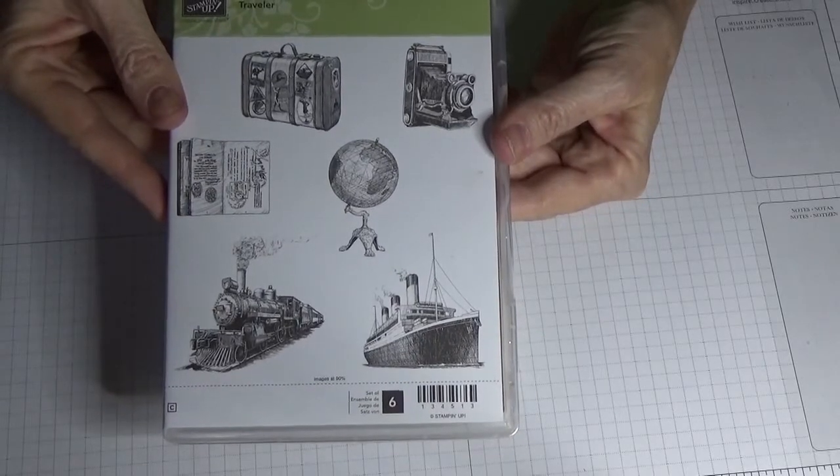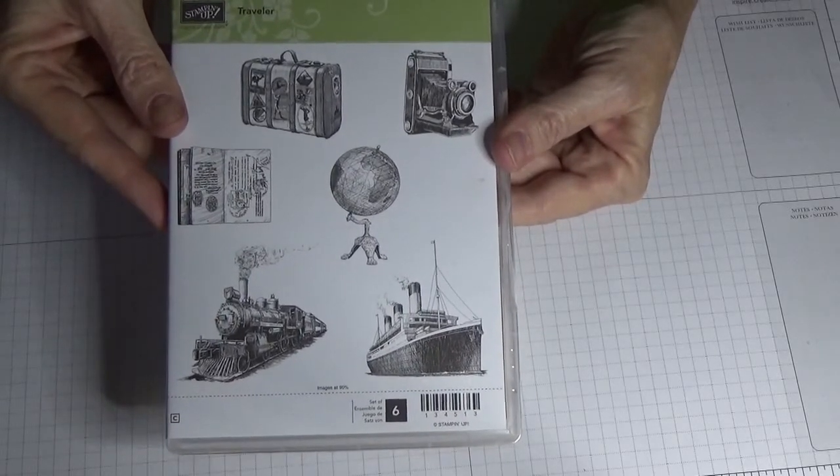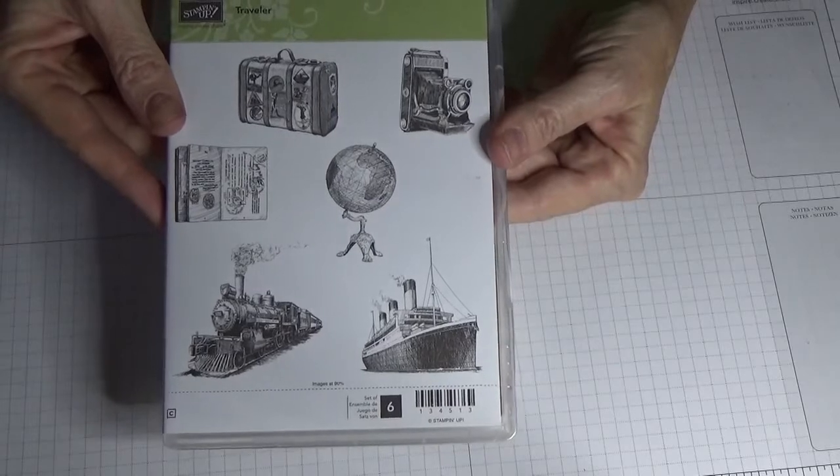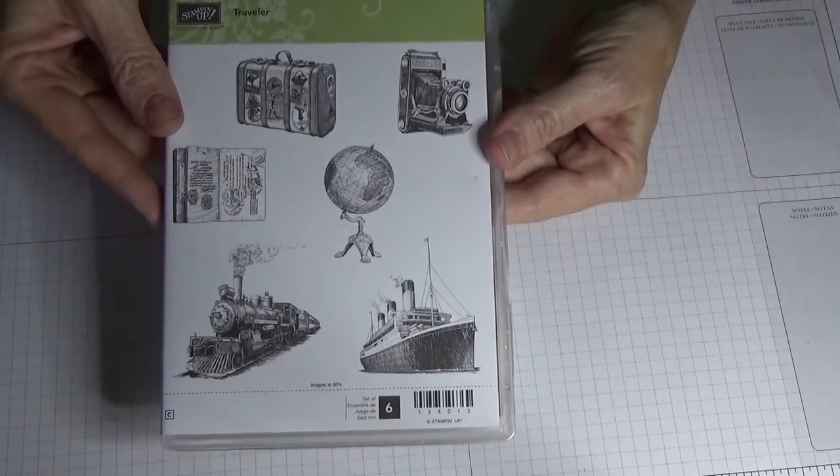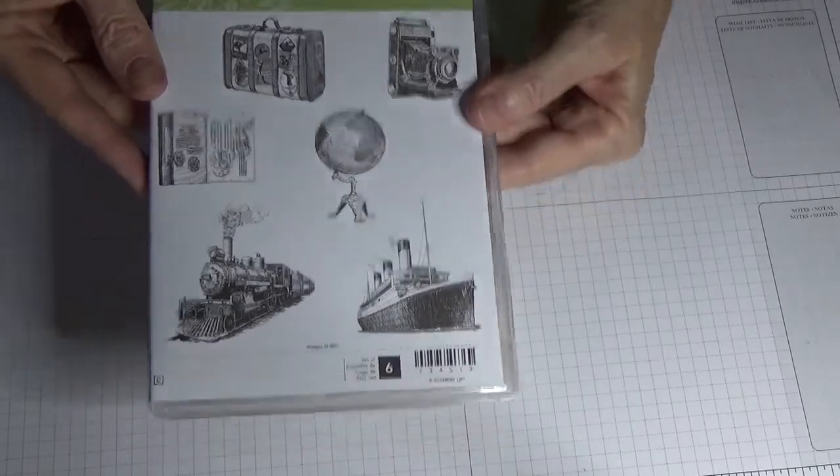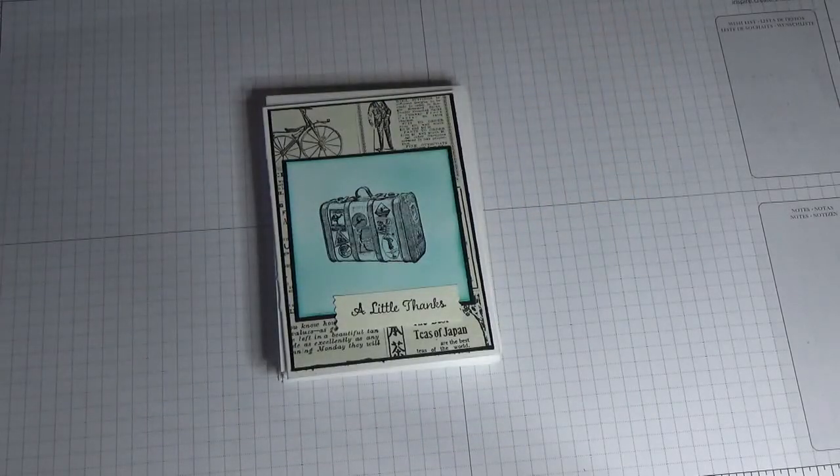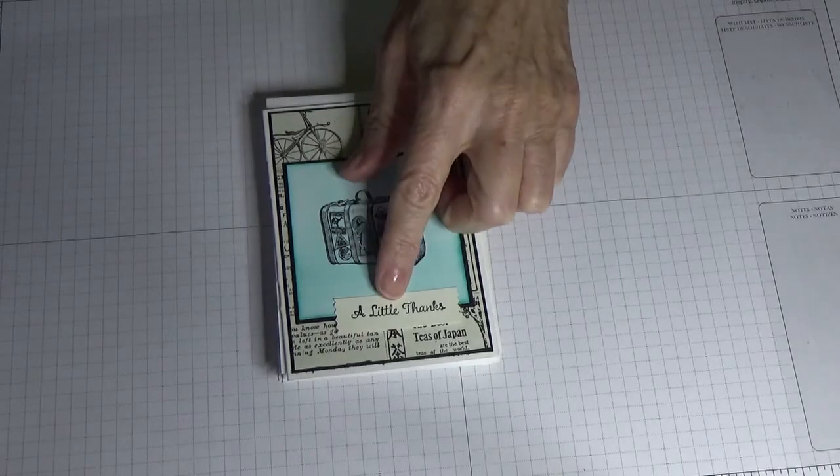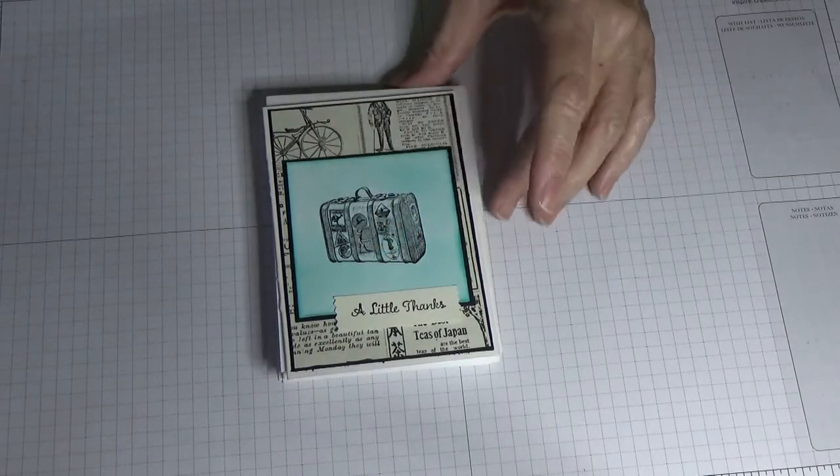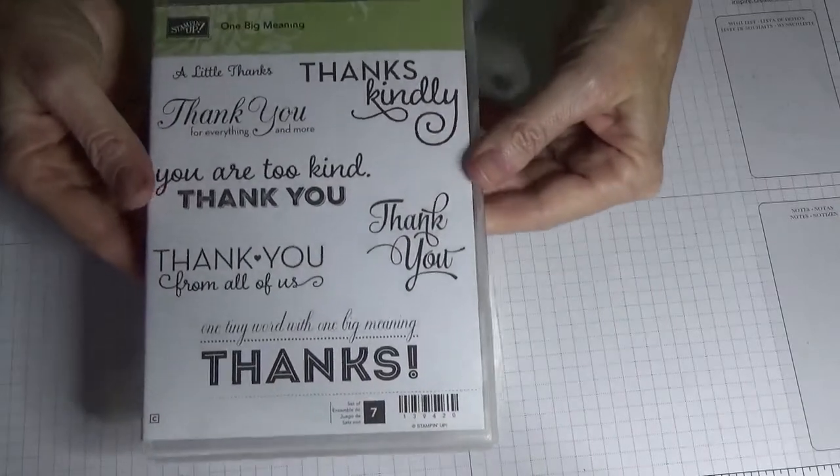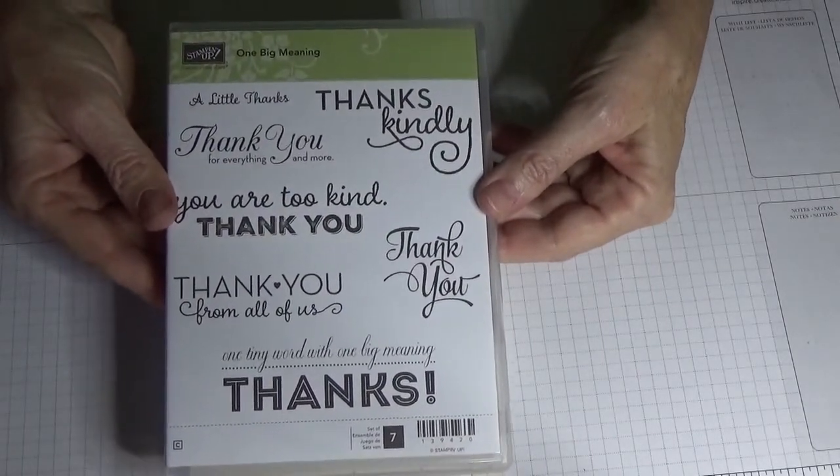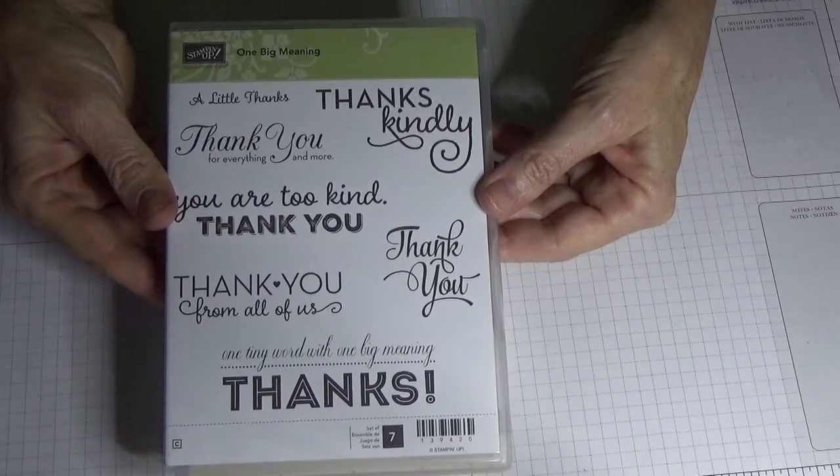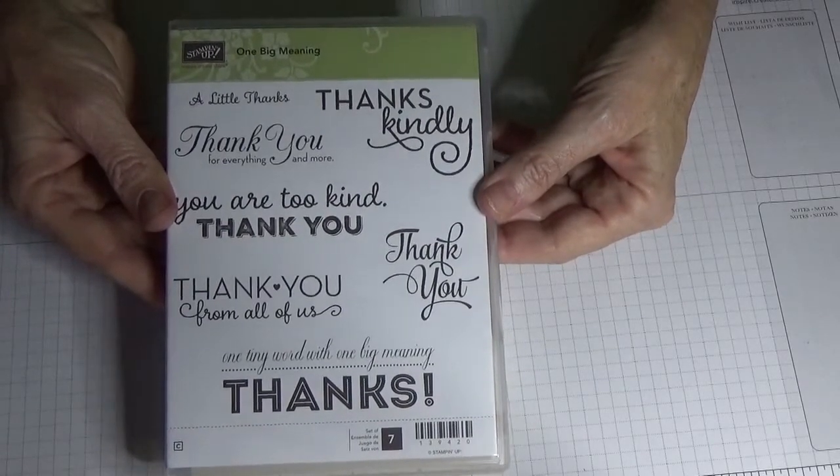I've used every image on each note card so that you have six matching note cards to go into your little tote bag. And the little sentiment I've used is a little 'thanks' that has come from the lovely stamp set One Big Meaning, which has just so many different ways to say thank you.